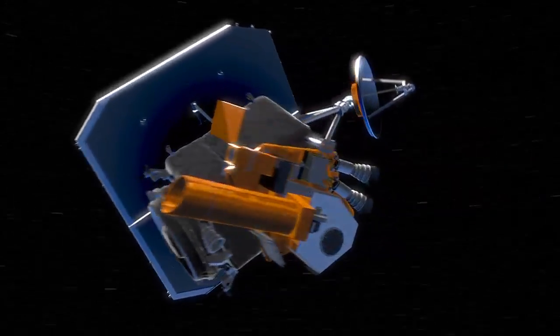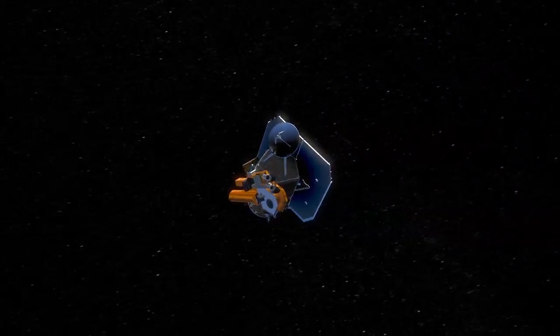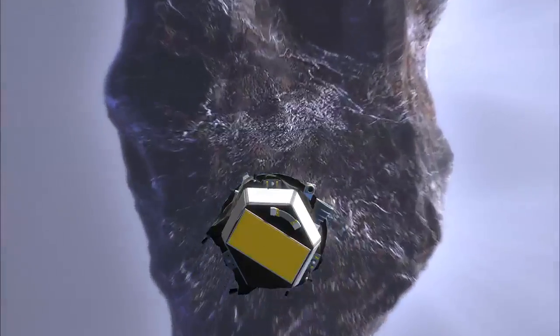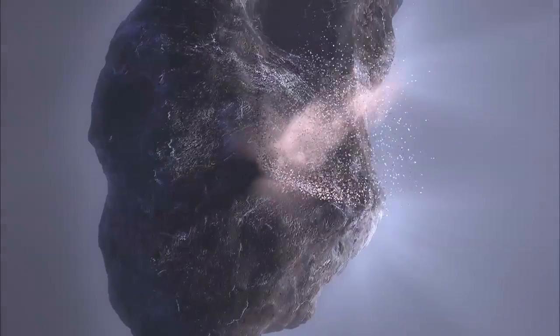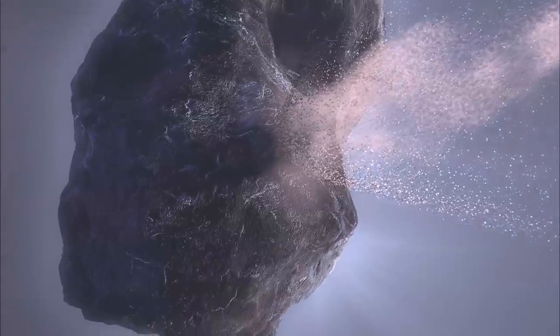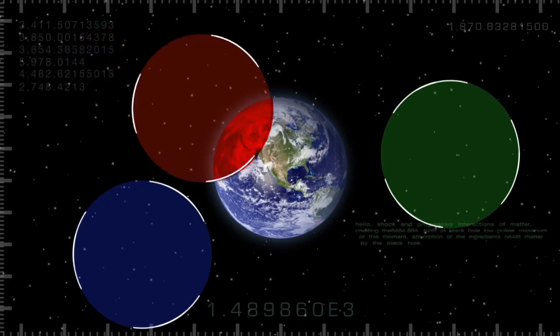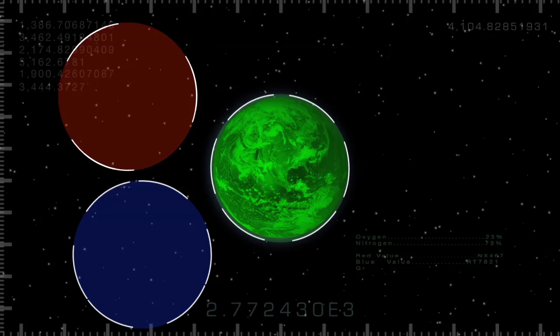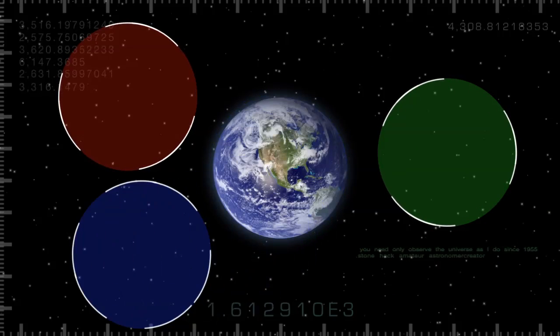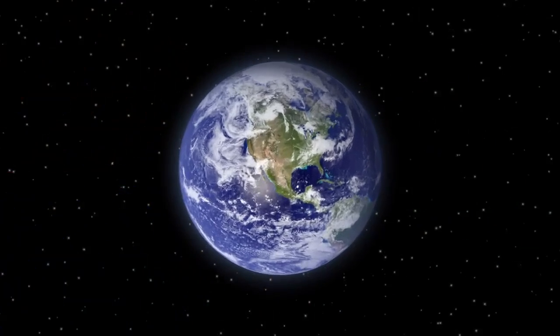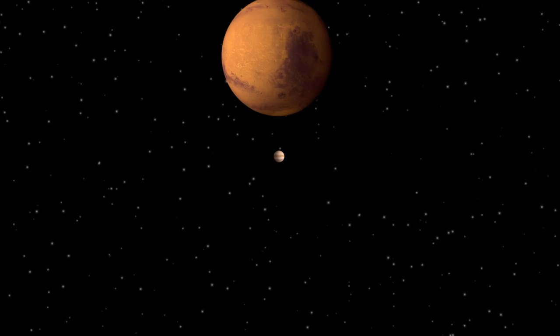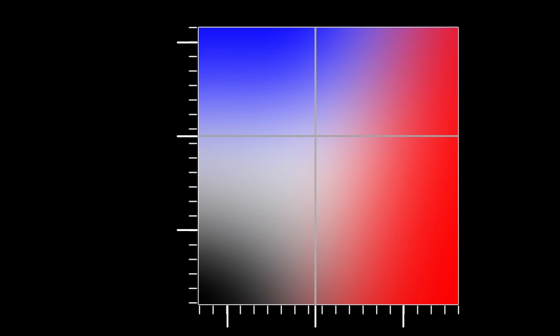Well it turns out they can. Remember the Deep Impact mission, the NASA spacecraft that slammed a probe into a comet in 2005? Well now it's headed for another comet. While on its way we used its instruments to study the amount of red, green and blue light reflected by Earth, the Moon and Mars. Combining this color information with similar studies of the other planets in our solar system, we found an interesting pattern.